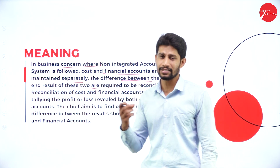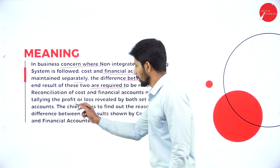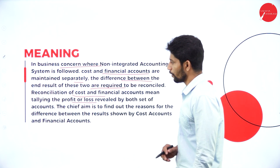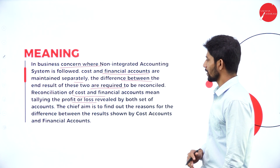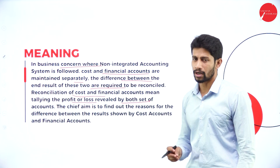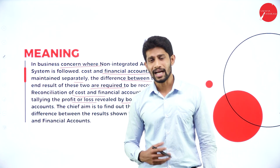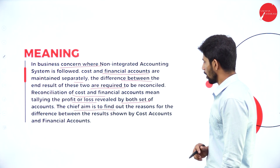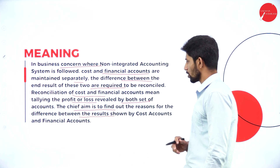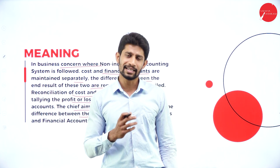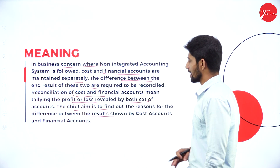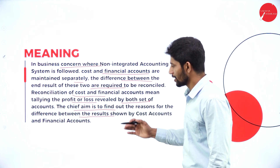You will get a difference in profit between the financial book and the cost book. So at the end, you should know why this difference is showing between these two accounts. Reconciliation of cost and financial accounts means tallying the profit or loss revealed by both sets of accounts — that is, the financial account as well as the cost account.